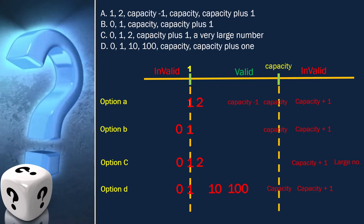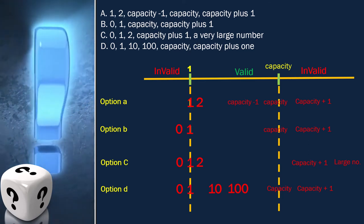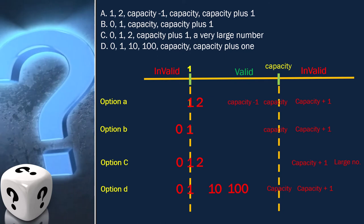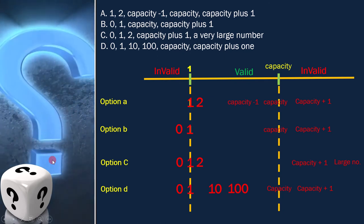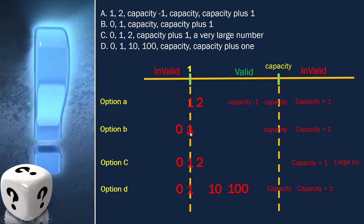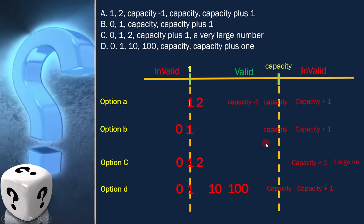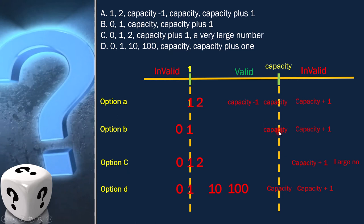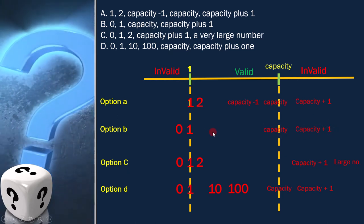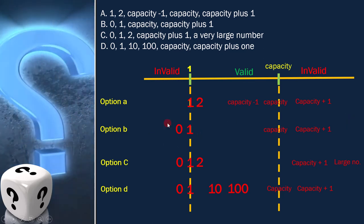As per the question, we have to find which of the following boundary value analysis is correct. Here if you look into option B, 0 is in invalid range, 1 is in valid range, capacity is in valid range, and capacity plus 1 is in invalid range. That is why option B is the correct answer.